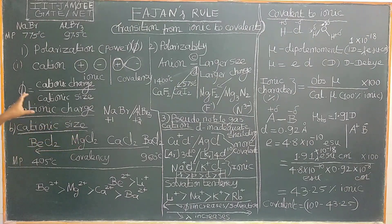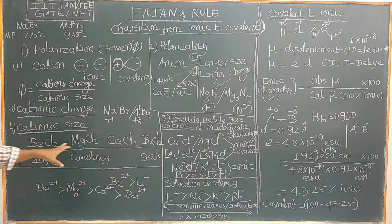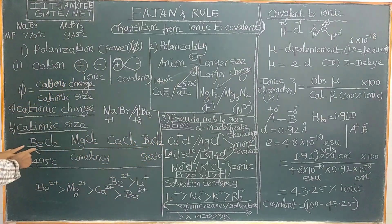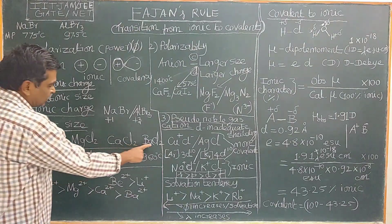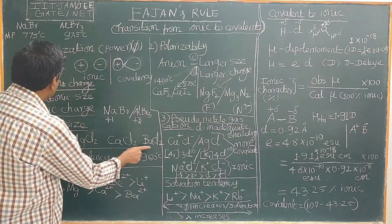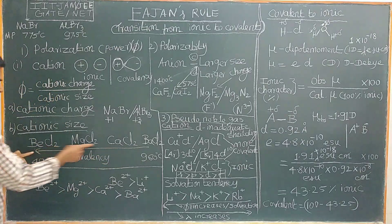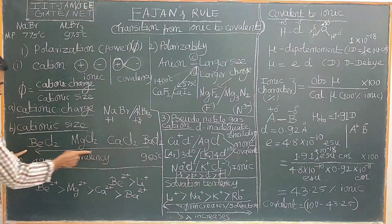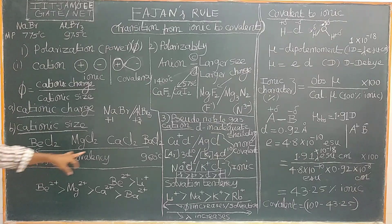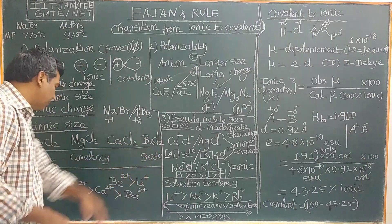Considering cationic size: for alkaline earth metal chlorides such as beryllium chloride, the anions are the same. The cationic size increases down the group. As size increases, polarizing power decreases in that direction, and therefore covalent character decreases in that direction. As a result, beryllium chloride has a lower melting point compared to barium chloride, which has a higher melting point, confirming greater ionic character in barium chloride.